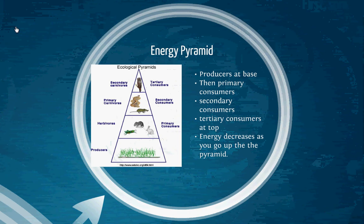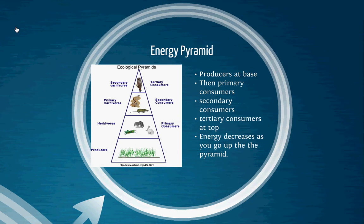Now, the nitty-gritty of what we're doing today that's different than what we've done before is the organization of this energy flow into pyramids. This is a picture of an energy pyramid. As you can see, producers are at the base, then you have primary consumers which are herbivores, then secondary consumers, and then tertiary consumers at the top of the pyramid. It can go up more levels than tertiary, but since most examples usually just go to the tertiary consumer, I'm going to show you this way.